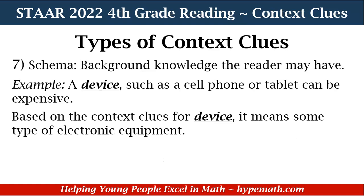Our last type of context clue is called schema — background knowledge the reader may have. Our sample sentence says: a device such as a cell phone or tablet can be expensive. Based on the context clues for device, it means some type of electronic equipment. You know that because a cell phone or a tablet — what is that? It's an electronic device. That is how you figure out what the context clue means.